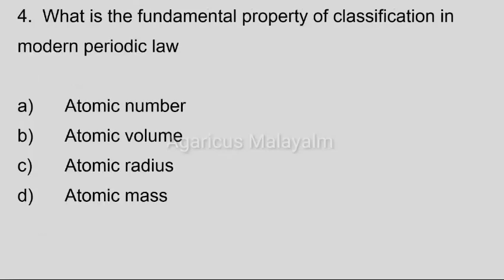Fourth question: What is the fundamental property of classification in the modern periodic table? Option A: atomic number; option B: atomic volume; option C: atomic radius; option D: atomic mass. Correct answer: option A, atomic number.